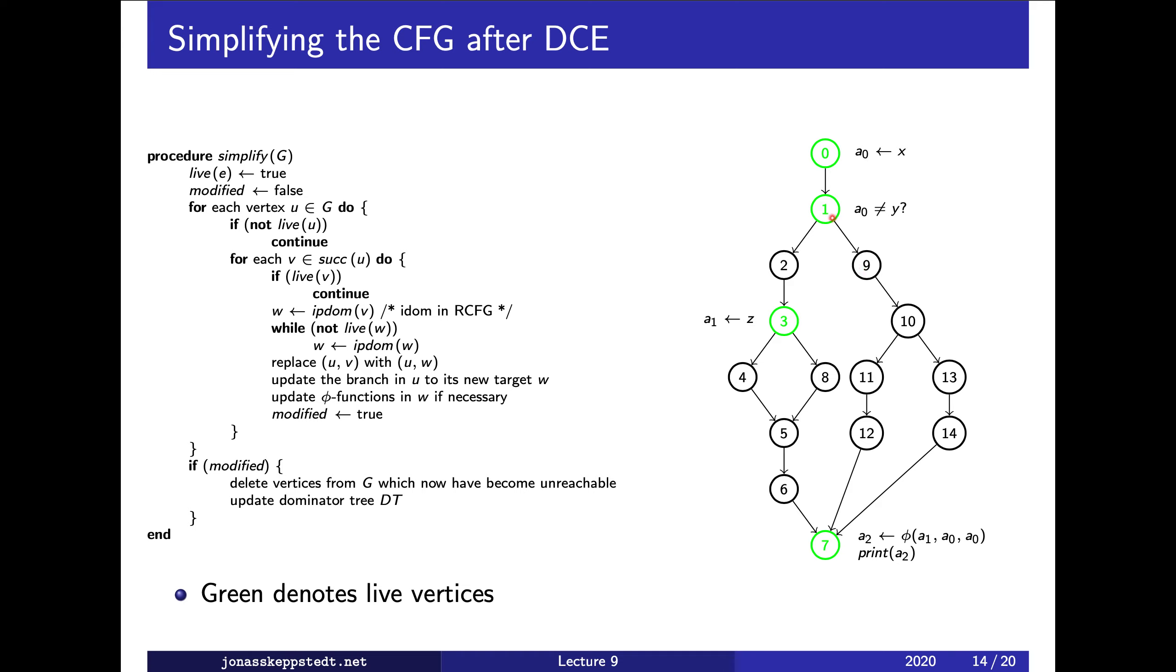When we have the case of branching from one to nine, we don't want to do that. Instead, we follow post-dominators up. The first immediate post-dominator of nine is ten, and then it's also dead, so we will eventually jump directly there. That means we will soon see a branch from one to seven.